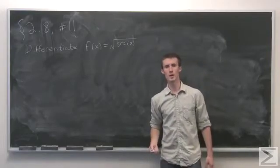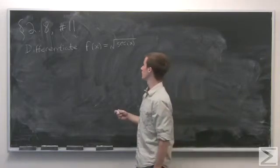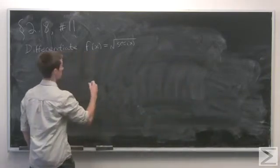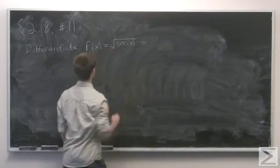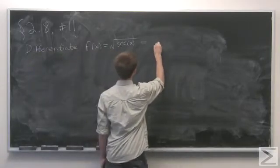Problem number 11 of section 2.8 asks us to differentiate a function involving the secant. First off, let's rewrite our function f(x) equals square root of secant of x with exponents instead of radicals.